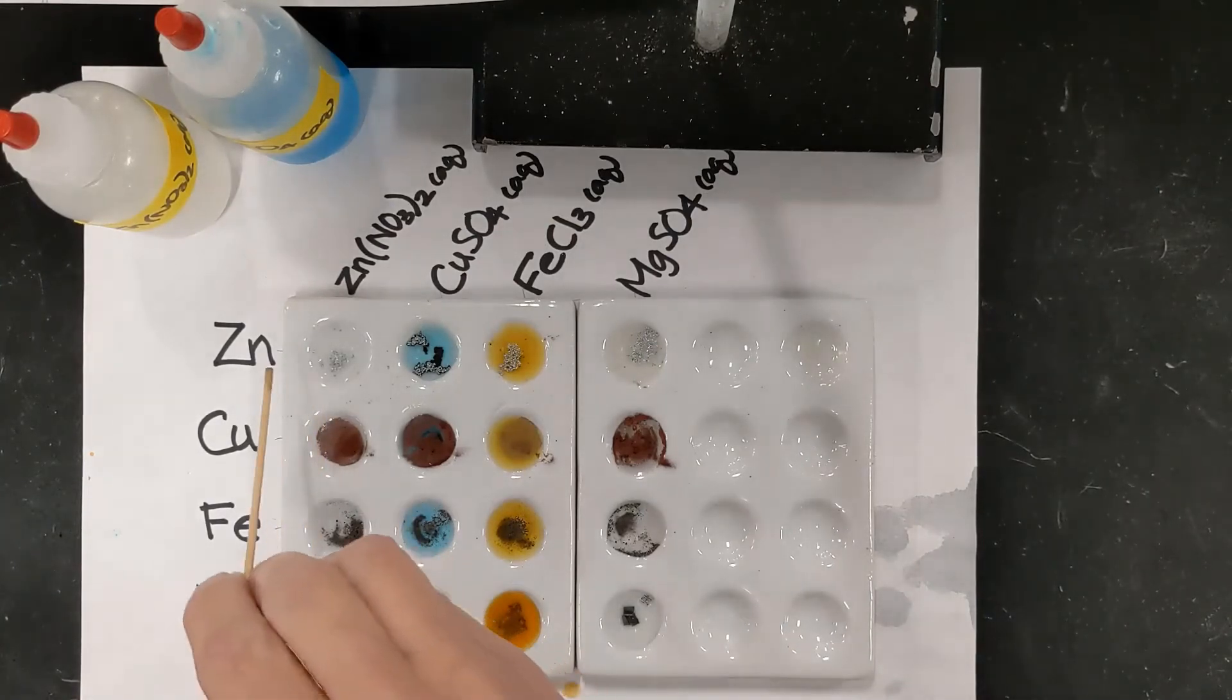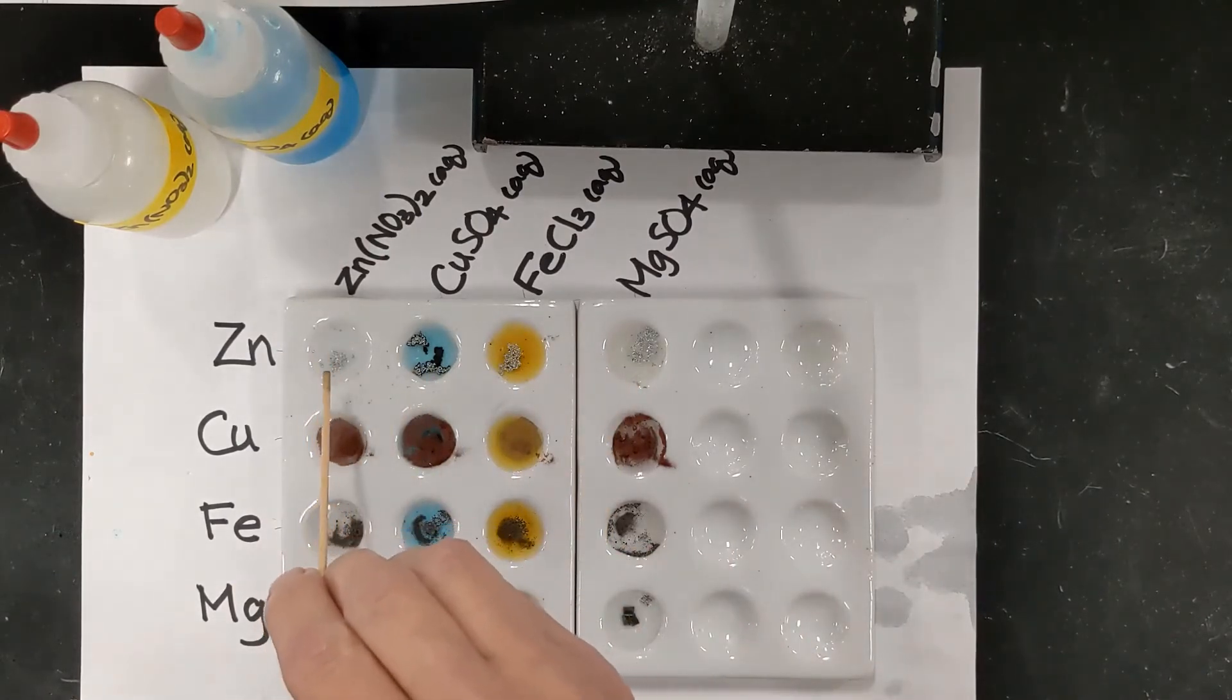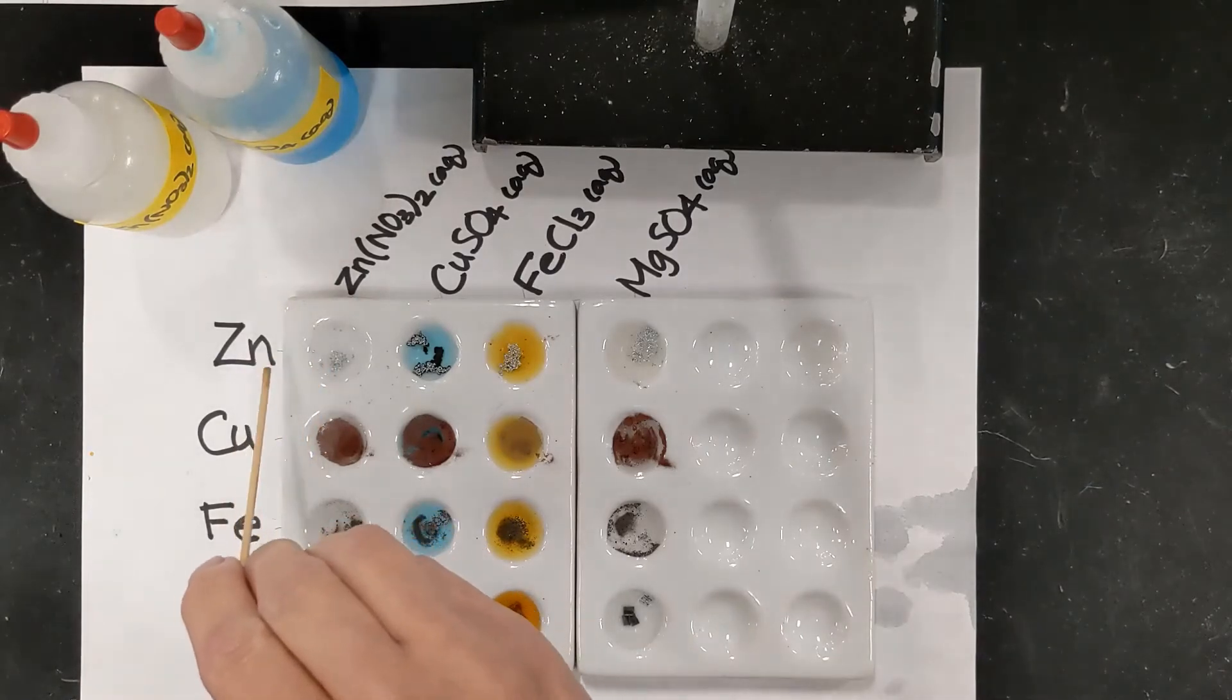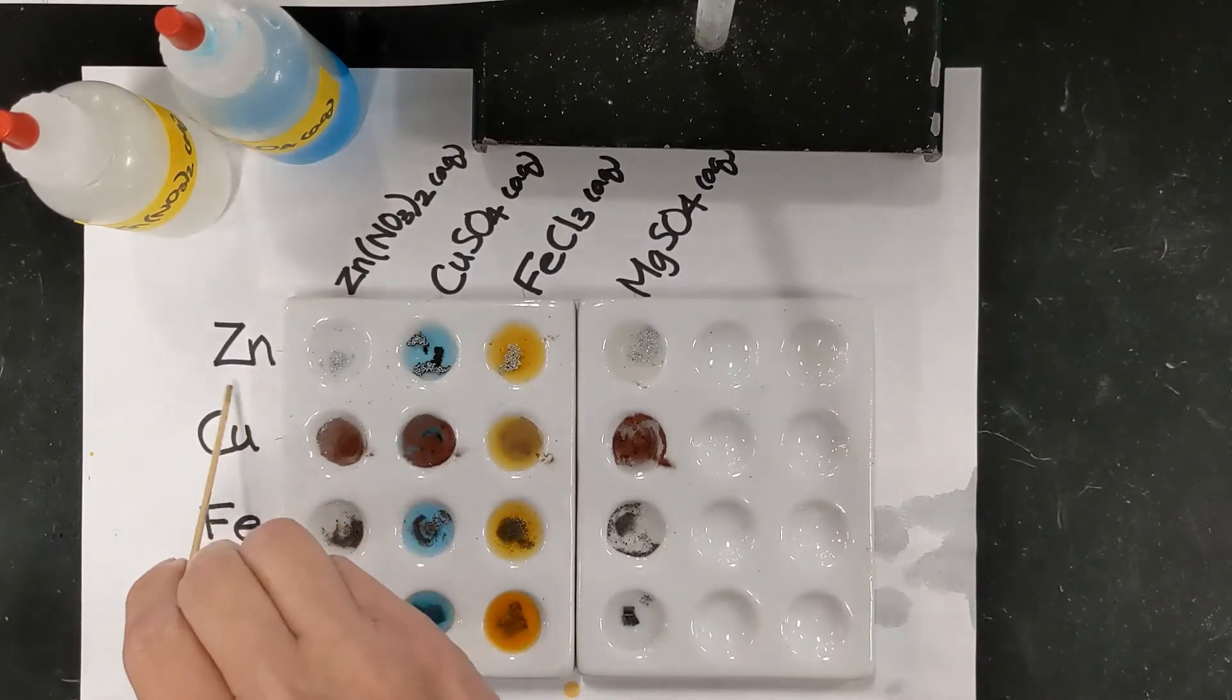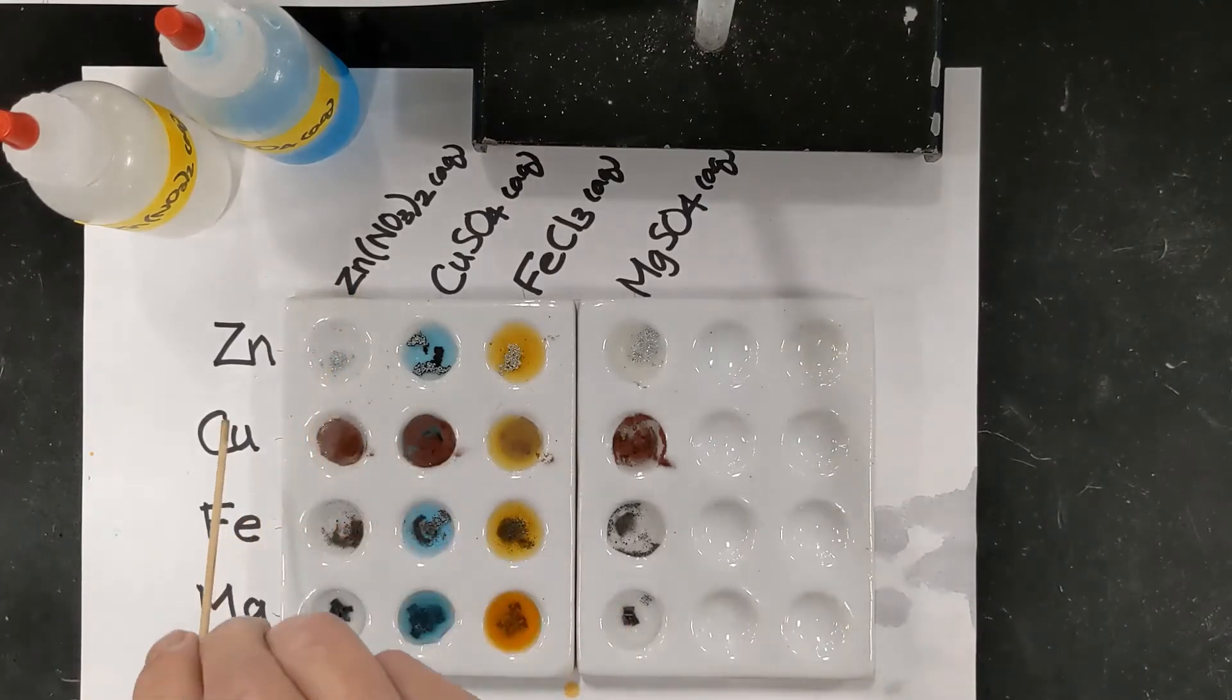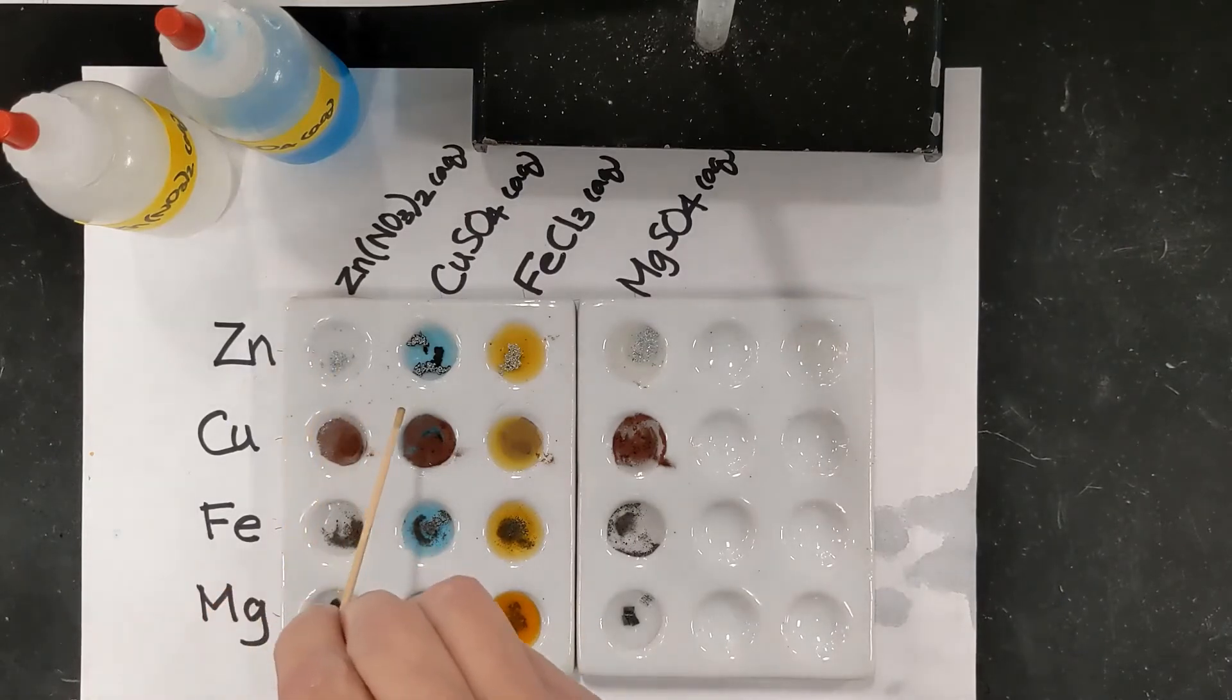And so now we'll see what our results are. So going across the zinc metal. In the first well, there's obviously no reaction there. And we wouldn't really expect one. We wouldn't expect zinc metal to react with its own ion. So that's not surprising. And all the way diagonally down, that should be our expectation too.